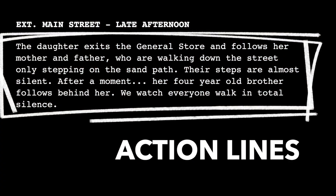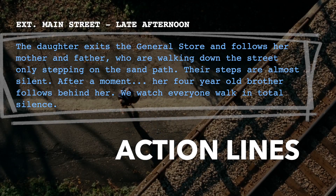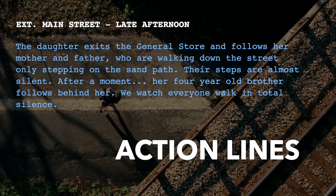These are the action lines. They aren't the words people are saying — they are the words that describe what people are doing. They are the words that describe to us what we see. Action lines tell the audience what is happening. When writing action lines, keep it visual. Make sure the action lines are something that can be seen. Everything has to be visual.